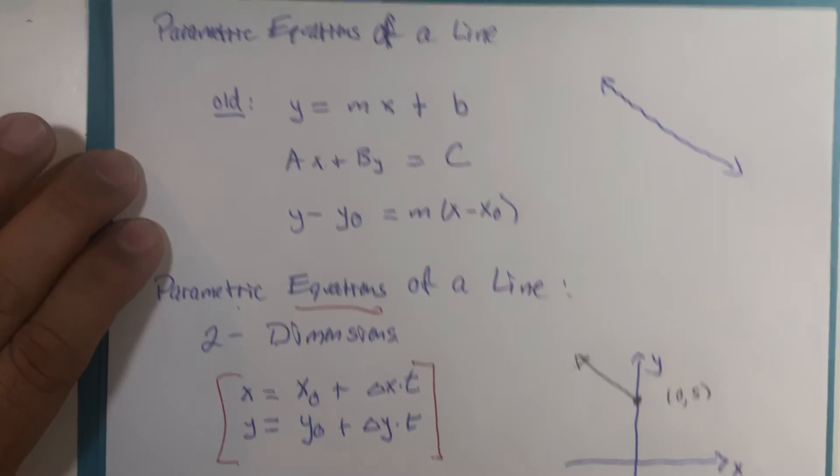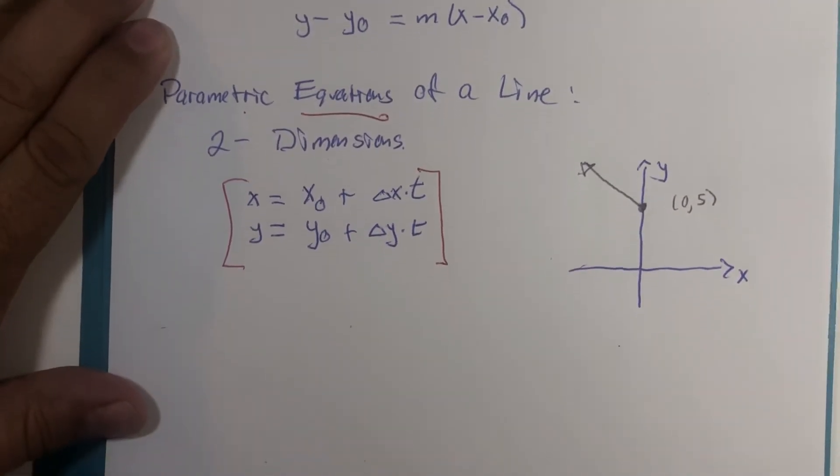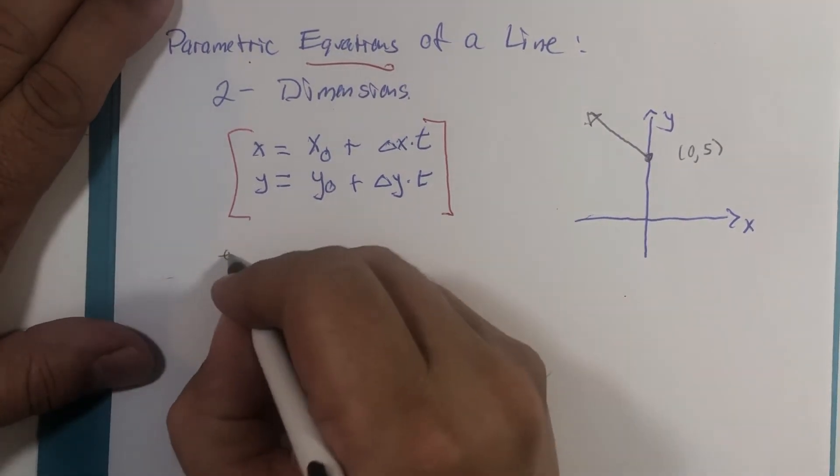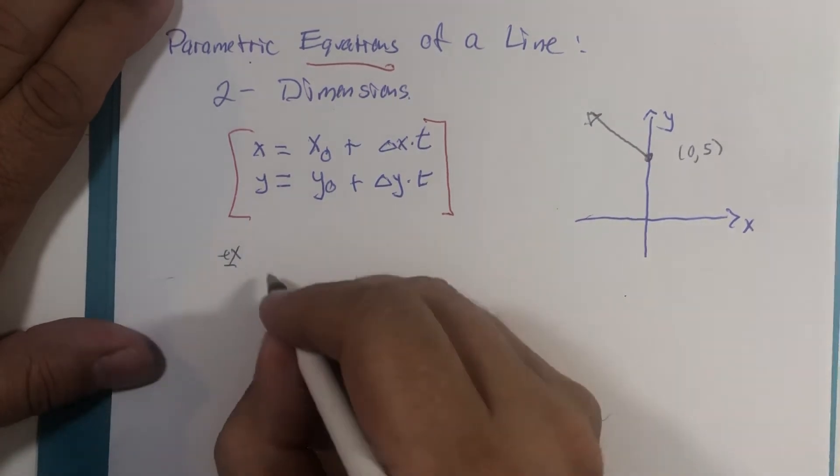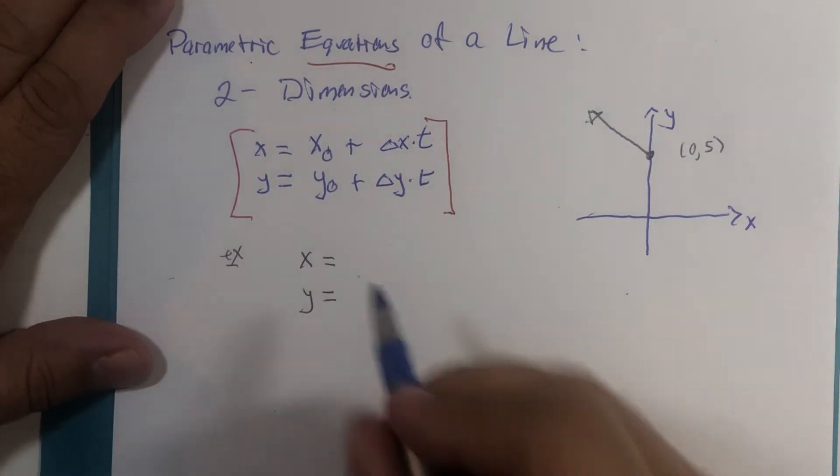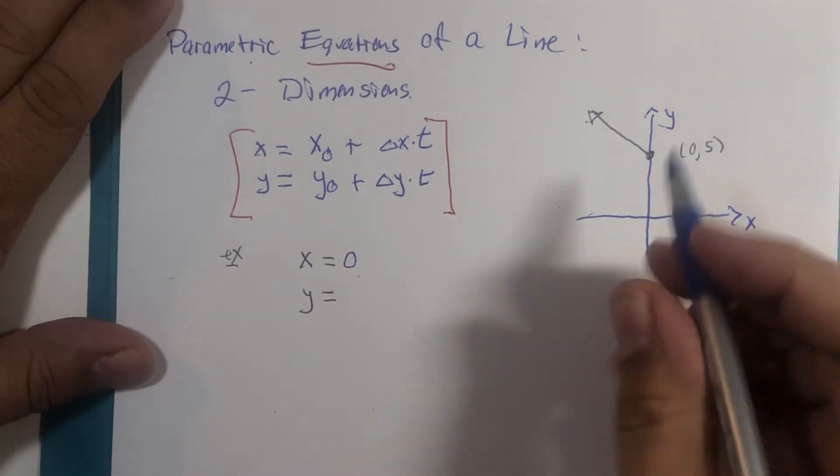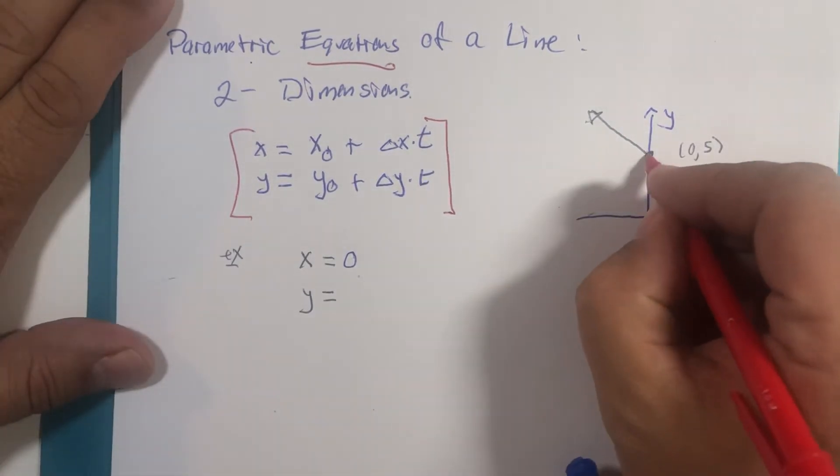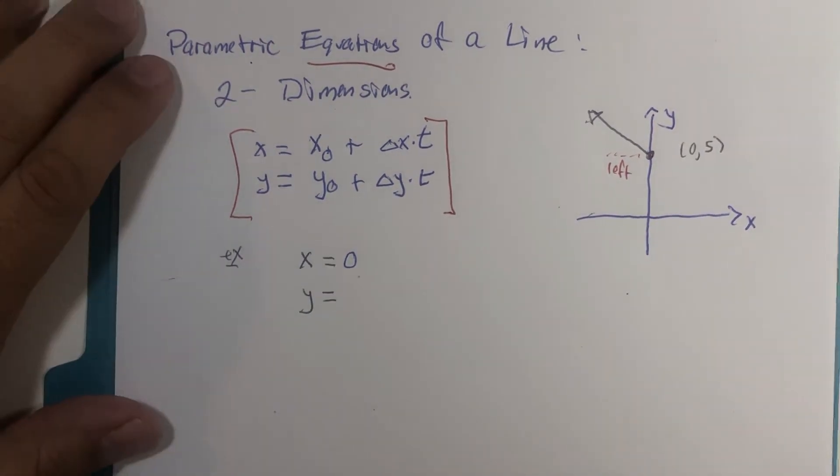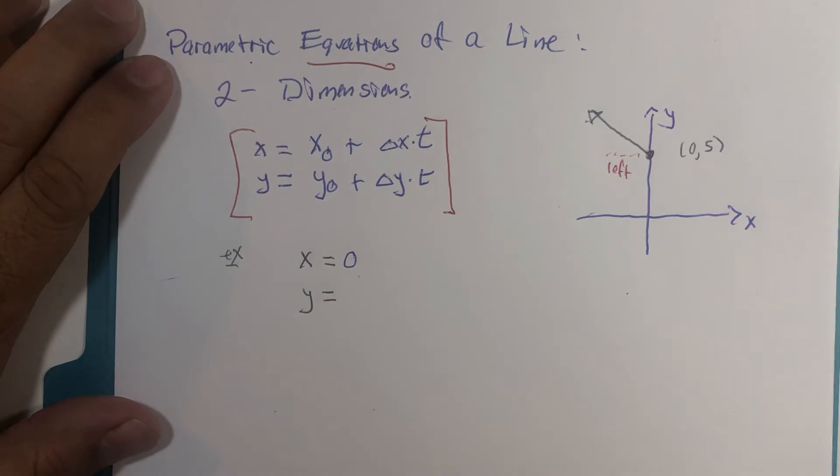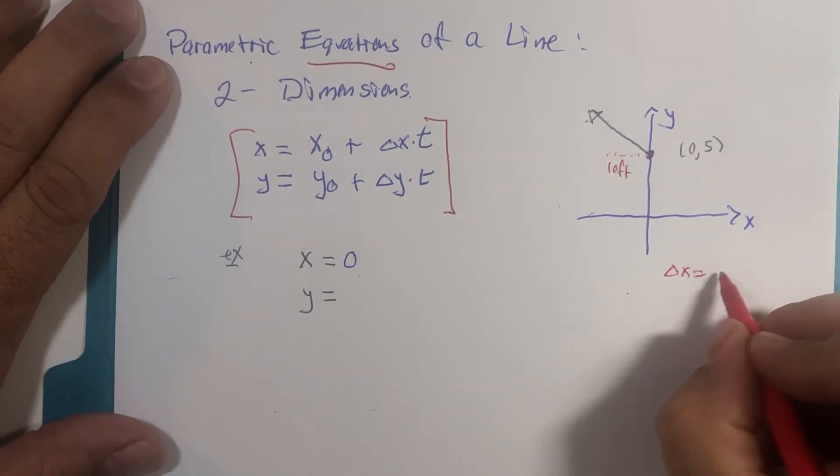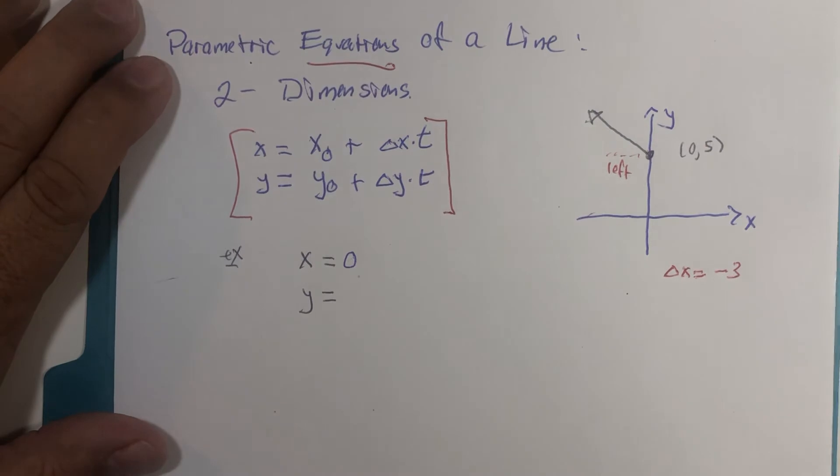For this particular problem, for our example, my x equation and my y equation, I know that the x value starts at zero and I know that it goes left. Let's suppose it goes left, how about three units? So delta x will be a negative three.